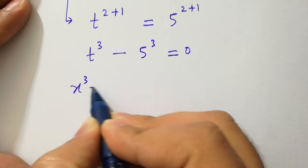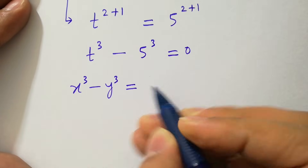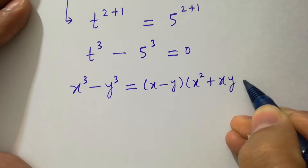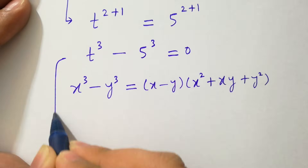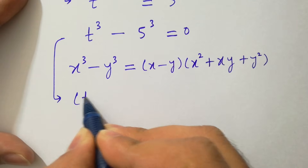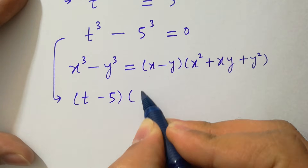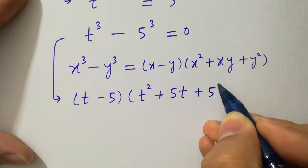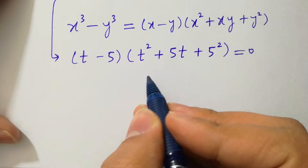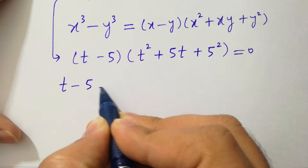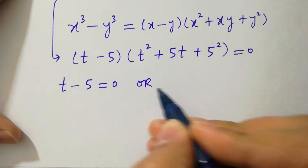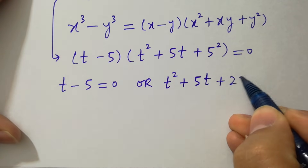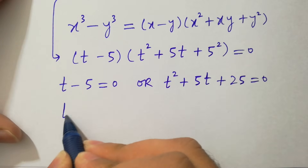By this we apply the formula of x cubed minus y cubed, which is equal to (x minus y)(x squared plus xy plus y squared). Applying this, we have (t minus 5)(t squared plus 5t plus 25) equal to 0.